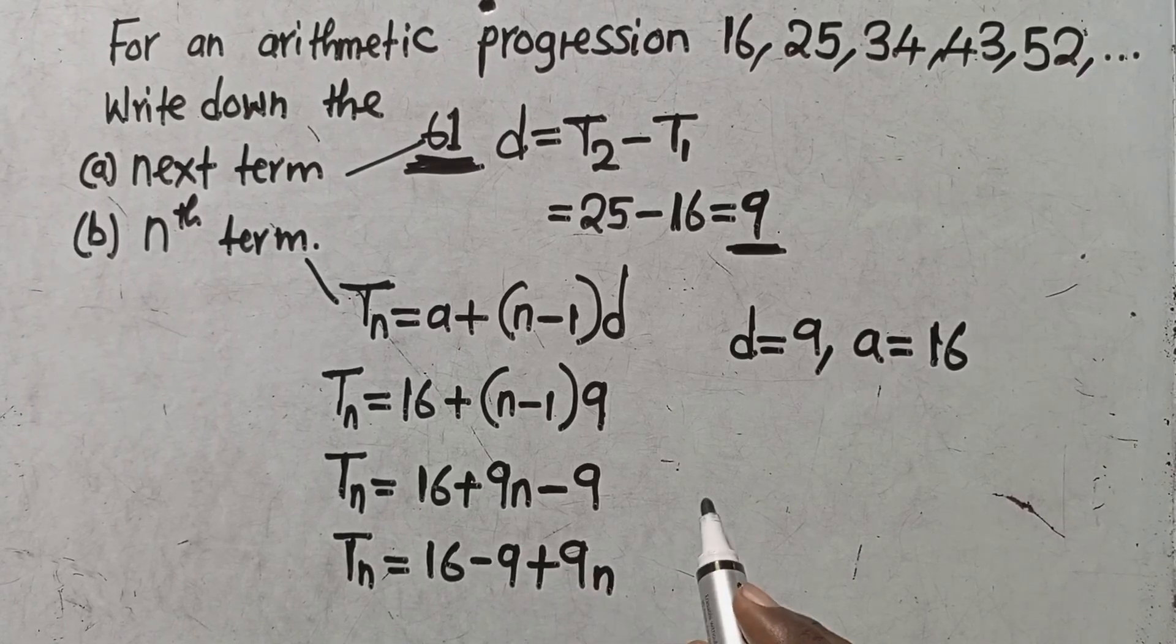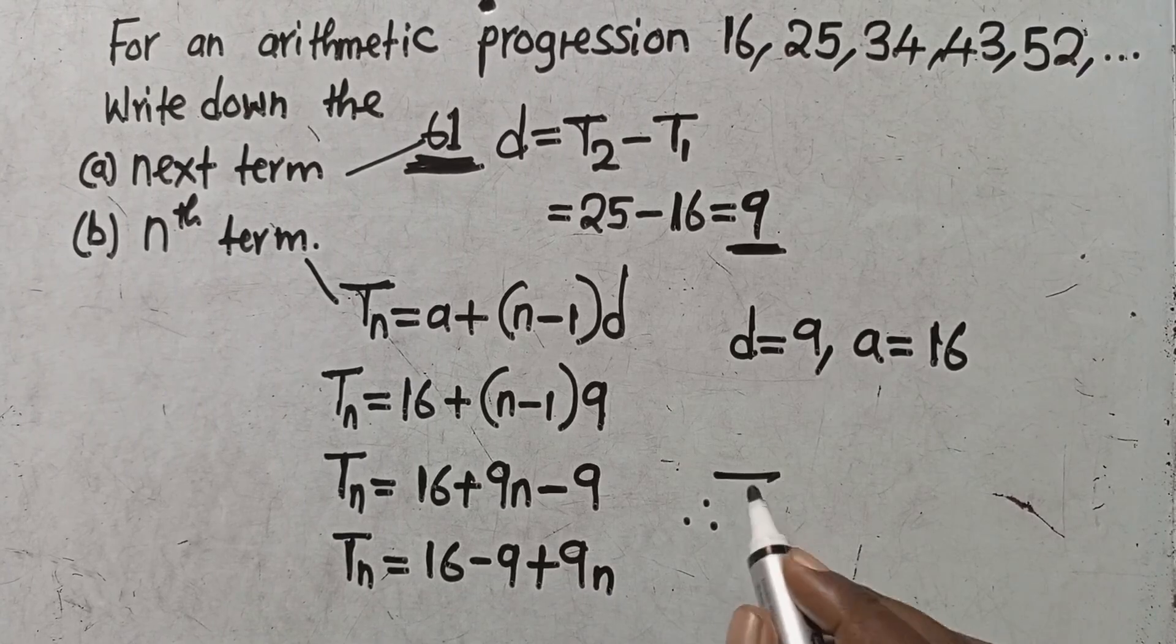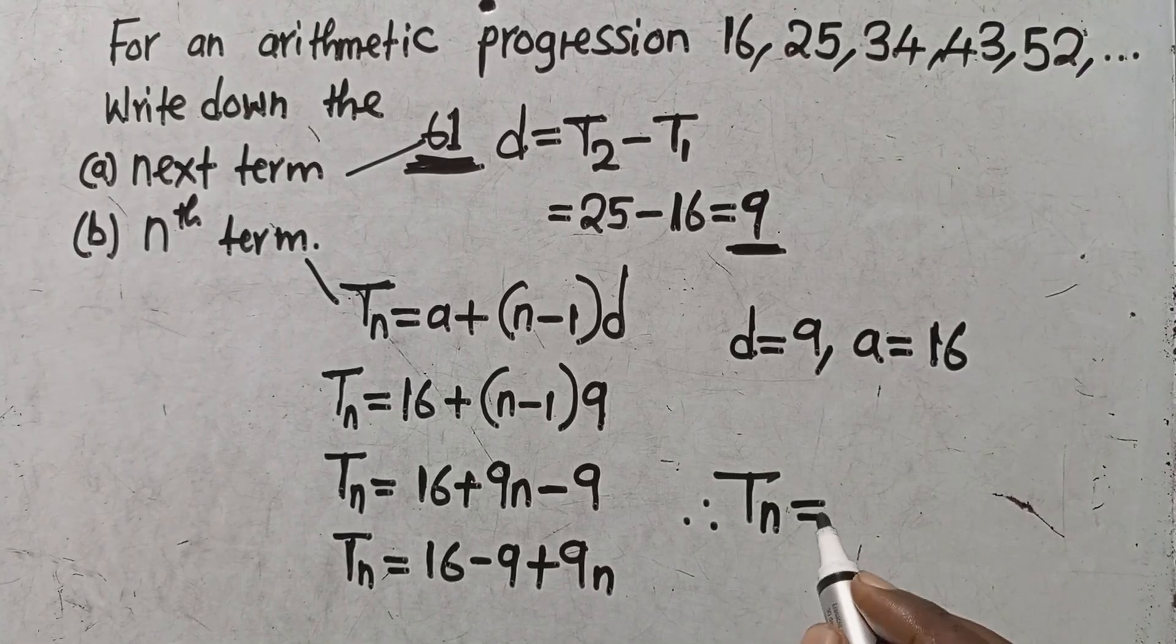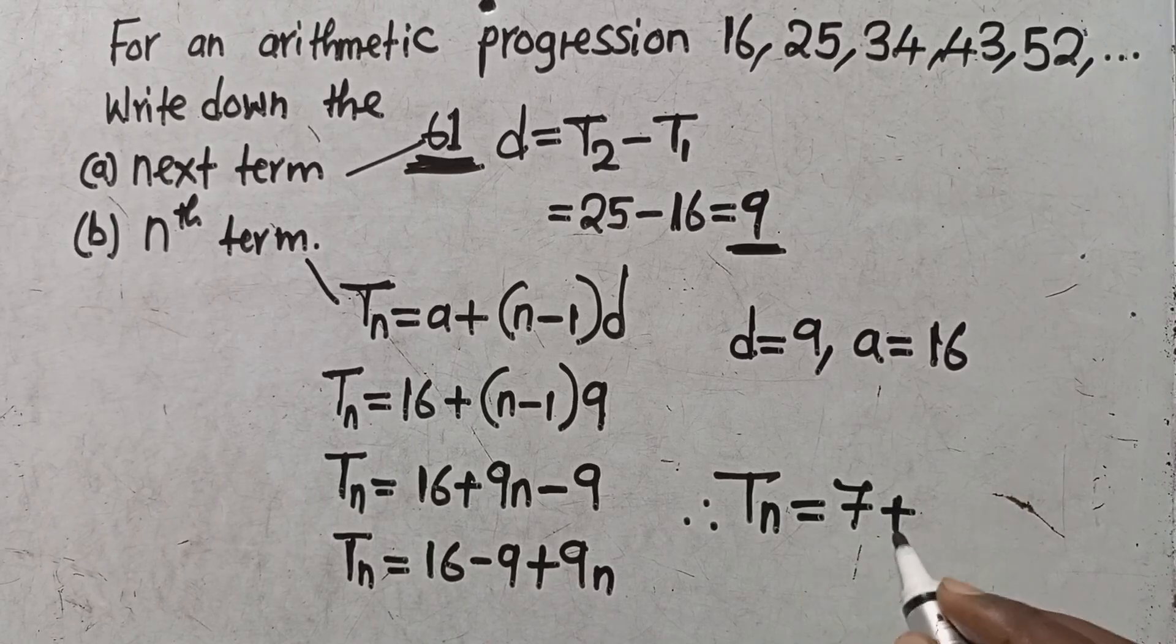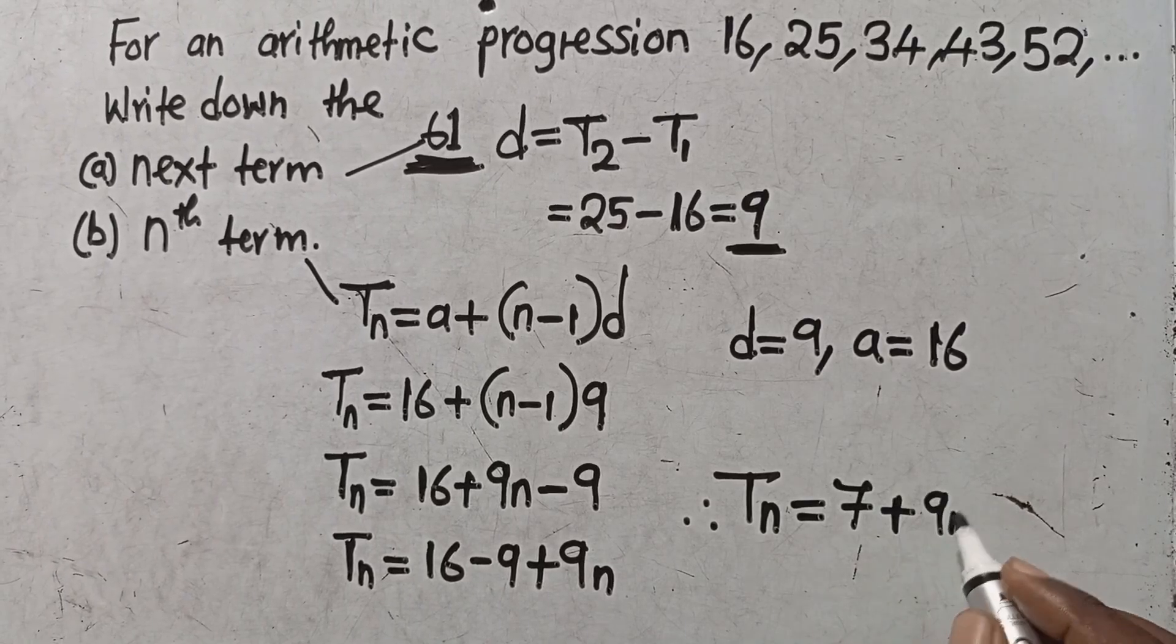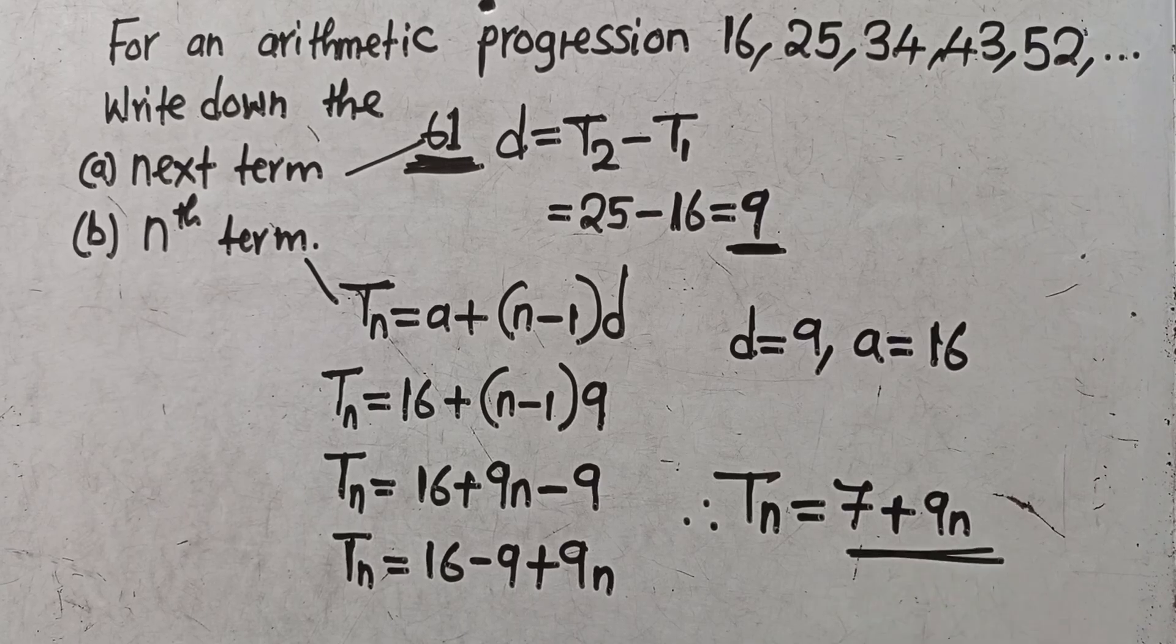Therefore the answer is, the nth term is given by the formula: when you subtract, you get 7 plus 9n. So this is your answer, this is the nth term. This is what you are supposed to do if you want to answer this particular question.